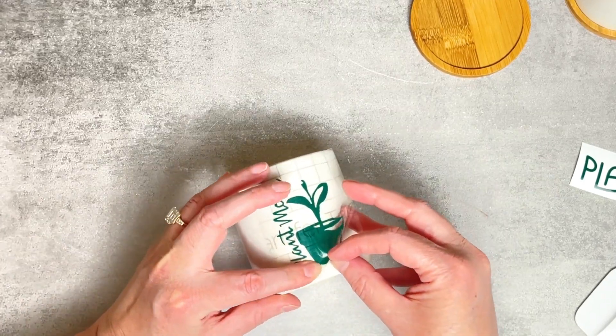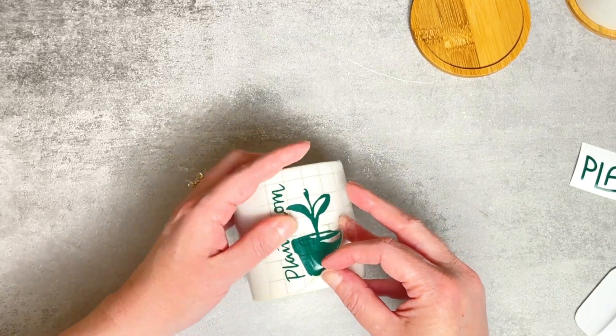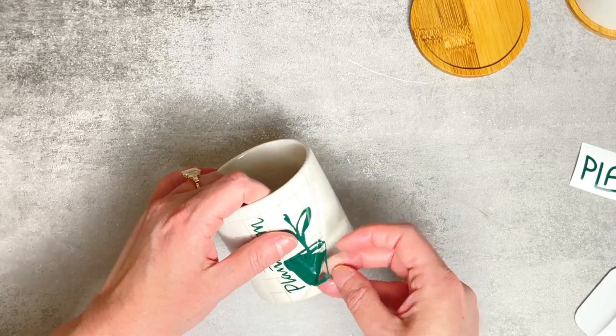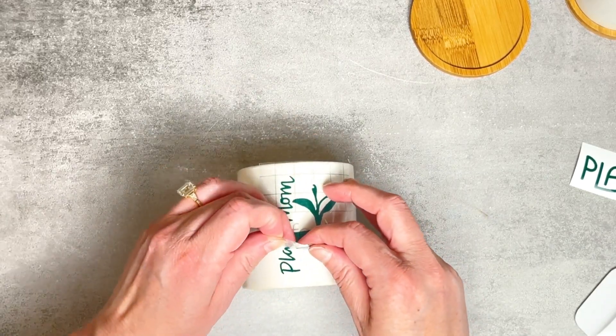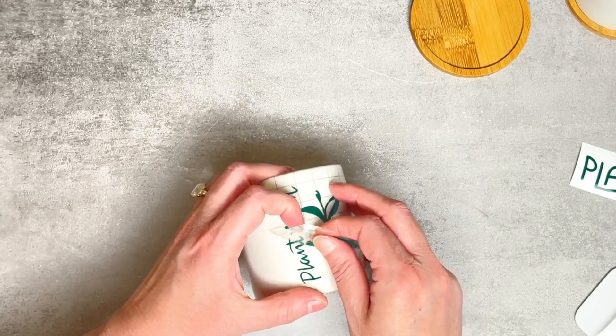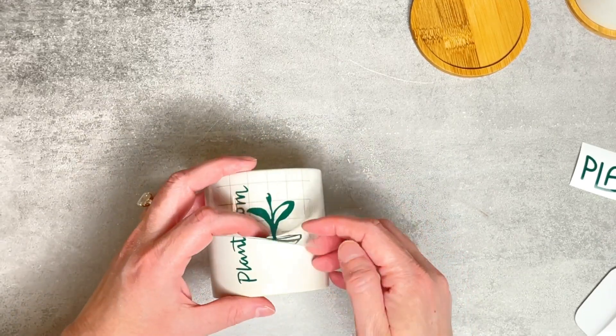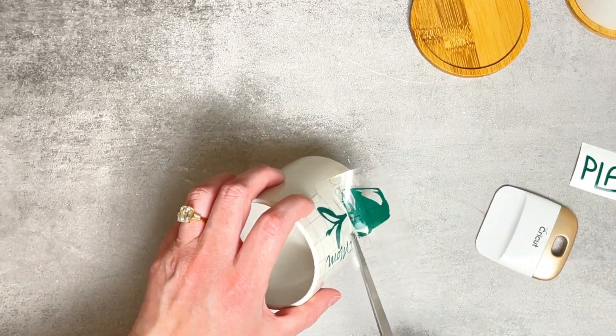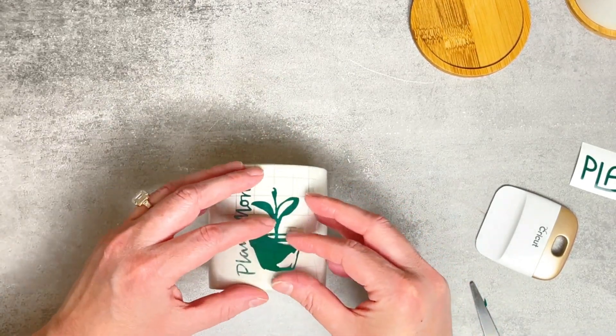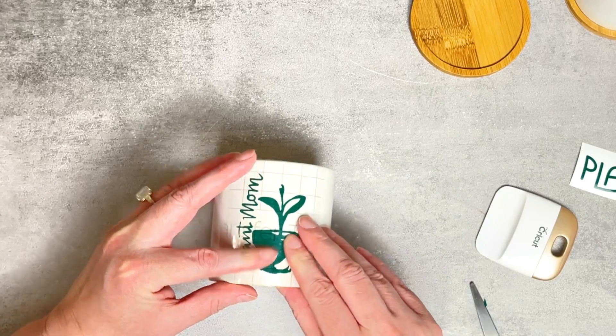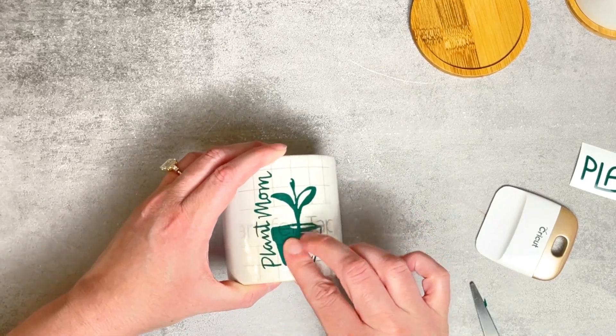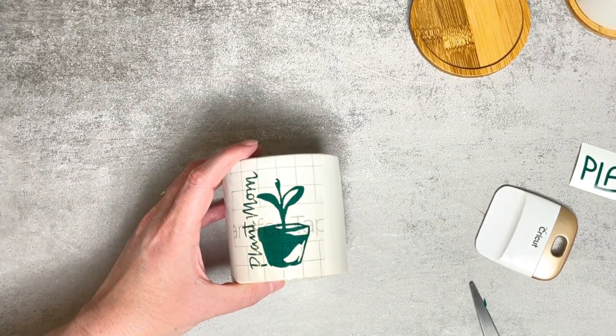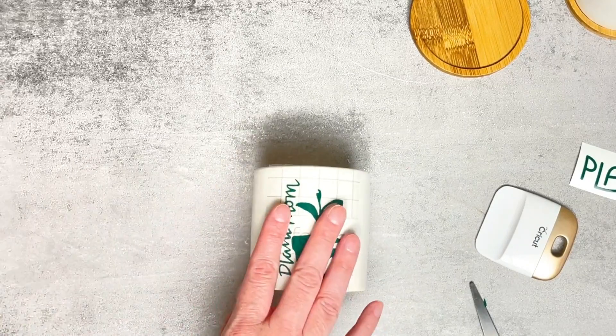I still have the plant up on this corner and I'm just going to go ahead and adhere this section first. Then I'm going to replace this down because I feel like this is getting caught up on that. I'm going to cut one little section there. There we go. That way we don't have any major air bubbles and then I can go back over this section just to make sure it's adhered really well.